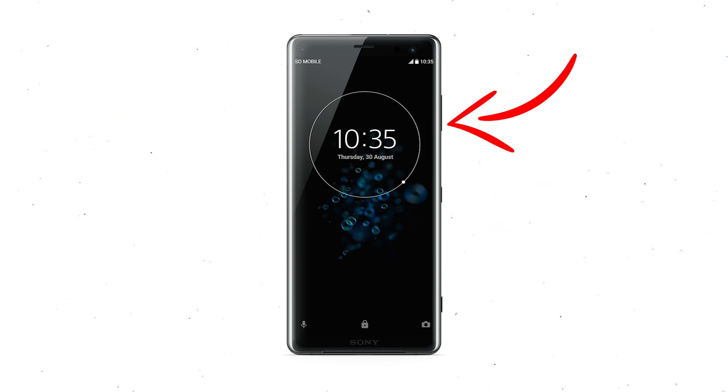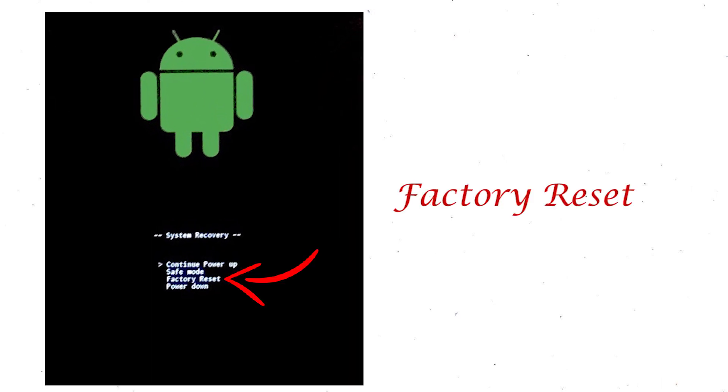Press and hold the Volume Down button and Power button. When you see the Recovery Mode screen, release all the buttons. Select Factory Reset using the Volume buttons and confirm with the Power button.